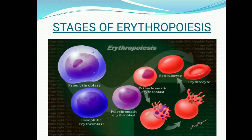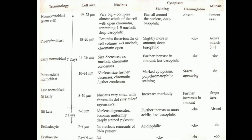The stages of erythropoiesis are a very important chart extracted from AK Gen. The stages are: hemocytoblast, proerythroblast, early normoblast, intermediate normoblast, late normoblast, reticulocyte, and erythrocyte. This chart is very important — please learn it properly. Changes occur in the nucleus, cytoplasm, staining, hemoglobin, and mitosis across these stages.